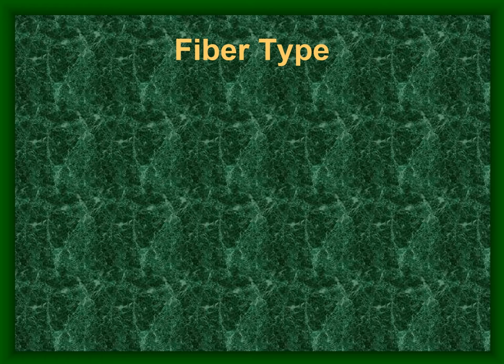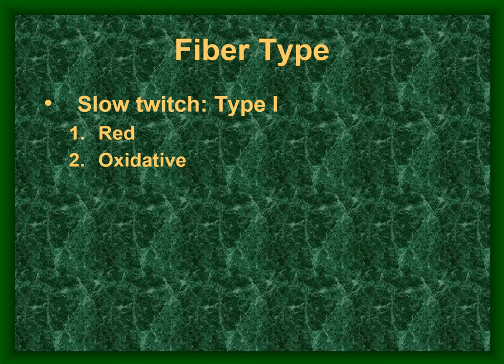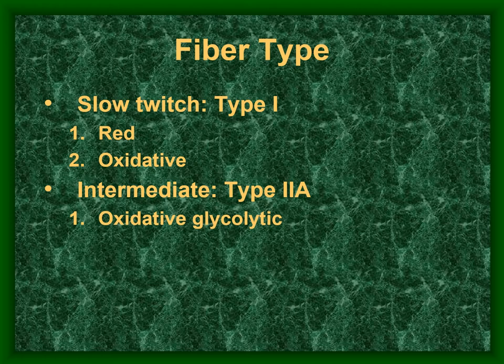Fiber types exist on a continuum, but we classify them into three types. At one end is the slow-twitch or red oxidative fiber — Type 1 — which cannot generate a lot of tension but has many mitochondria, giving it its color, making it suited for endurance.